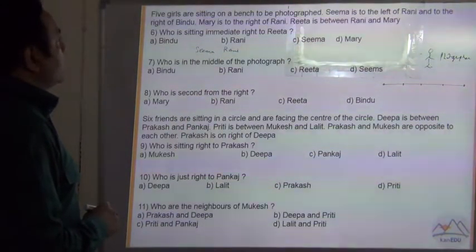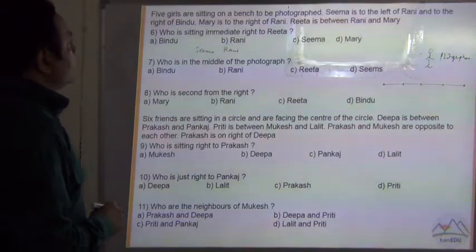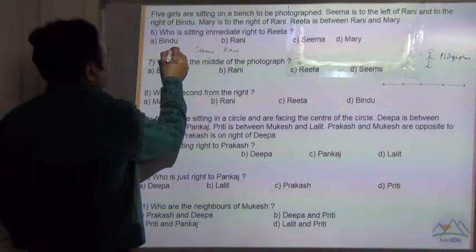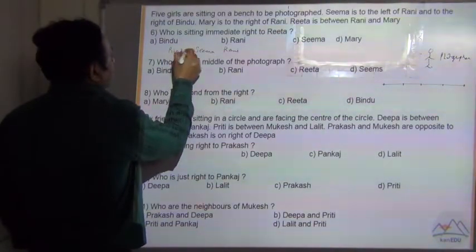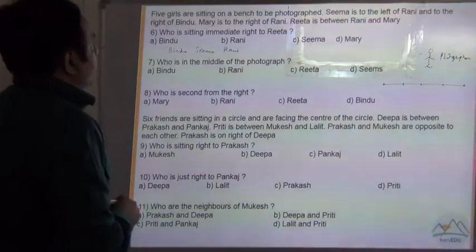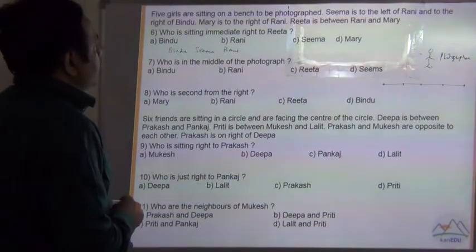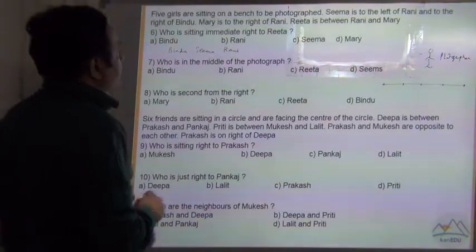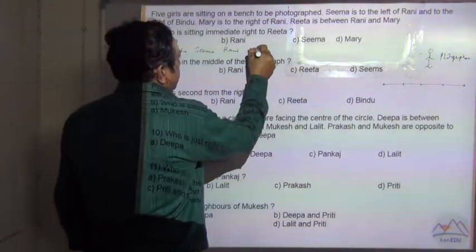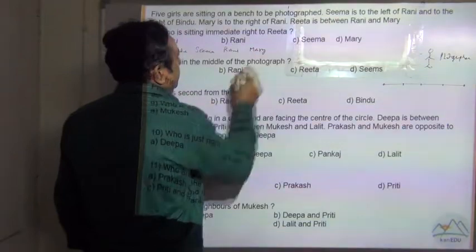Sima is also to the right of Bindu — she is right of Bindu. And Mary is right of Rani.